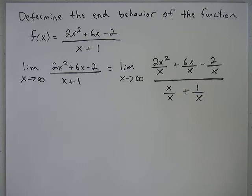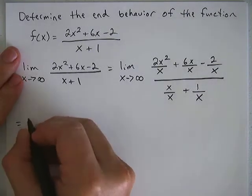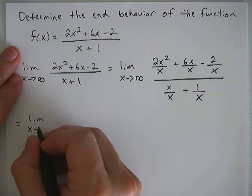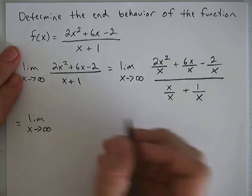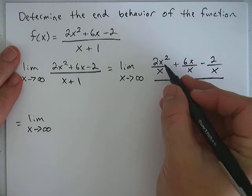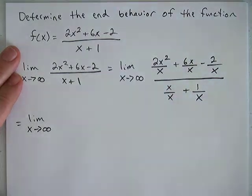Some of the terms are going to cancel out, which may help us in the next step. Let's find out. So the limit as x approaches infinity, this term right here is going to just turn into 2x.